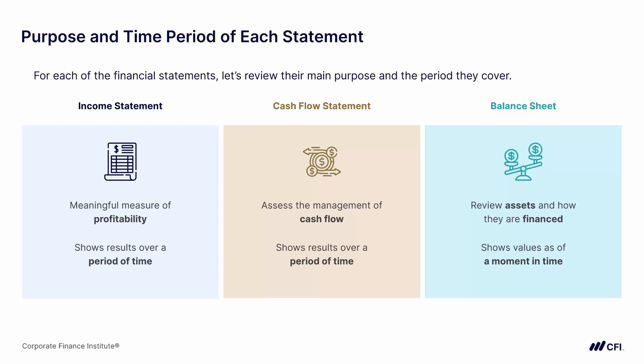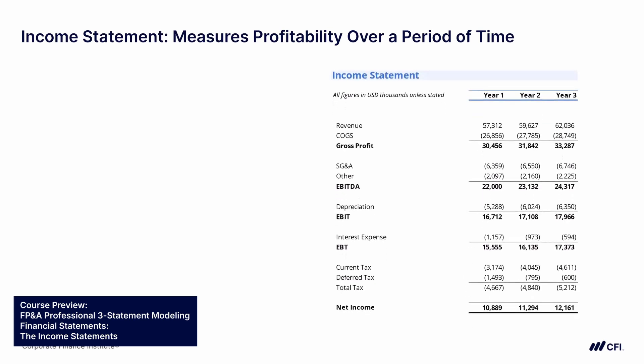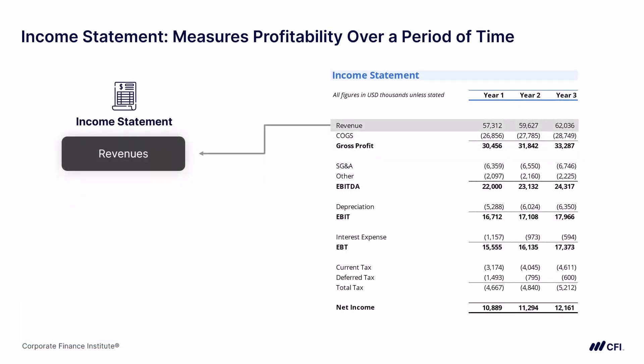Now that we understand the main purpose and time period of each statement, let's dig deeper into the structure of each one. The income statement measures profitability over a period of time. One of the first things people look at is commonly referred to as the top line — meaning the revenue right at the top of the income statement. The revenue is recorded based on accrual accounting, which means that all the revenue shown for year one was actually earned in year one.